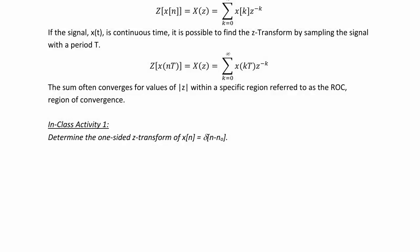If the signal x of t is in continuous time, it is possible to find the Z-transform by sampling the signal with period T, where the Z-transform of x of nT equals X of z, which is the summation from k equals 0 to infinity of x of kT times z to the negative k. The sum often converges for values of z within a specific region we refer to as the ROC, or region of convergence.